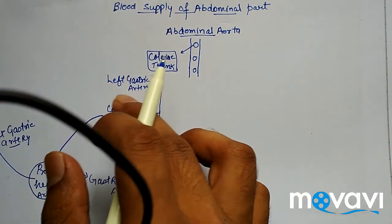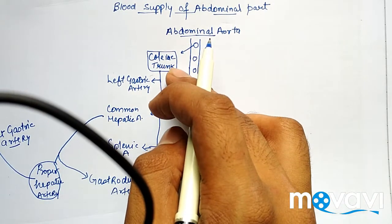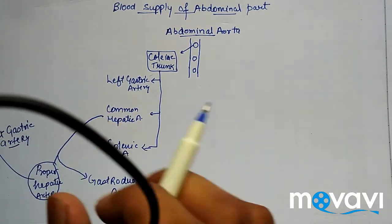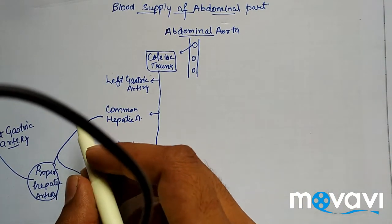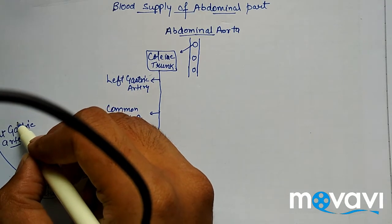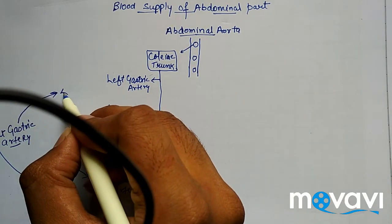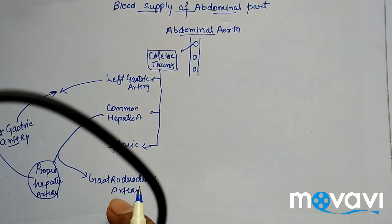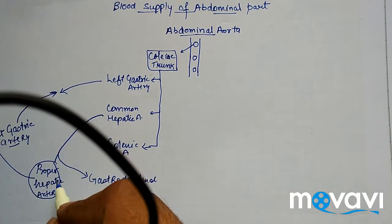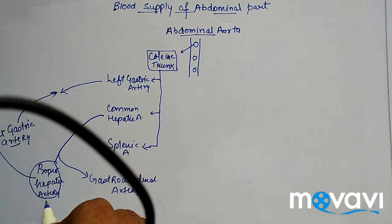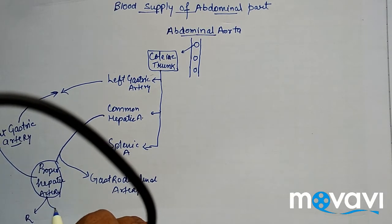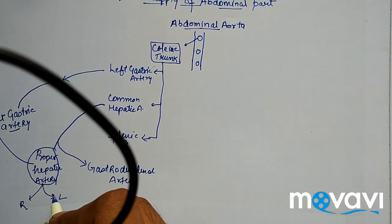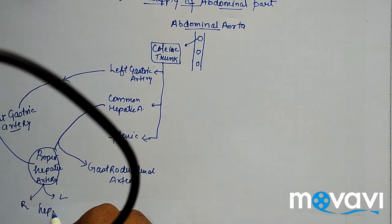The proper hepatic artery gives a branch called the right gastric artery. Remember, the left gastric artery is a direct branch of the celiac trunk, whereas the right gastric artery is a branch of the proper hepatic artery. Also remember that the right gastric artery anastomoses with the left gastric artery. The proper hepatic artery further divides into right and left hepatic branches.